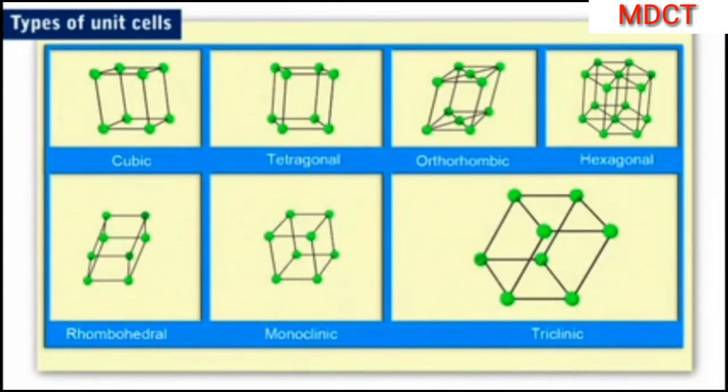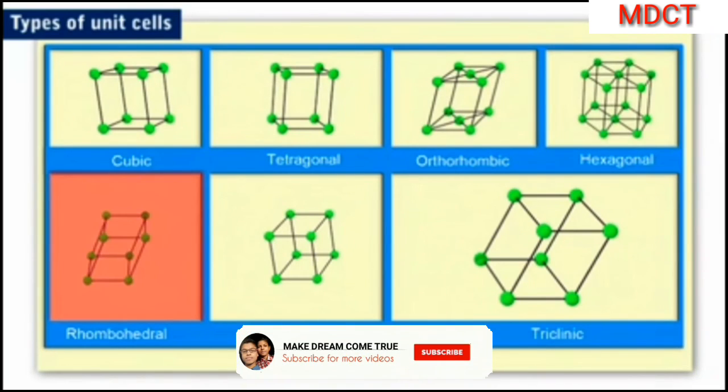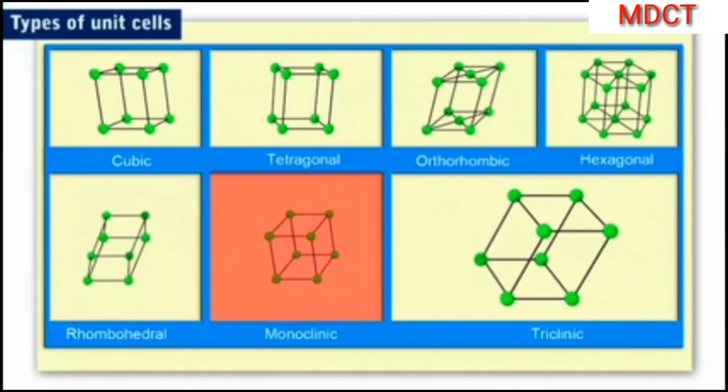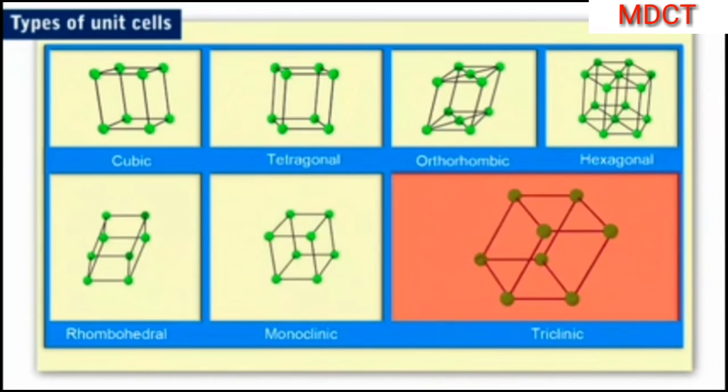Based on lattice parameters, we have seven popular crystal systems, mainly: cubic, tetragonal, orthorhombic, hexagonal, rhombohedral, monoclinic, and triclinic.